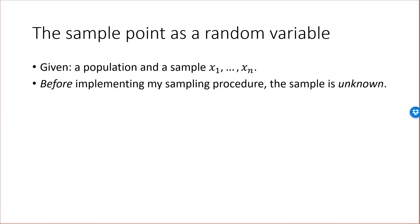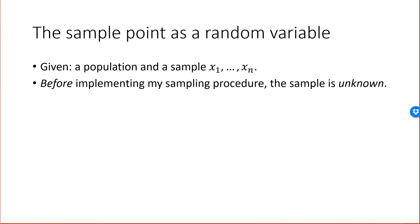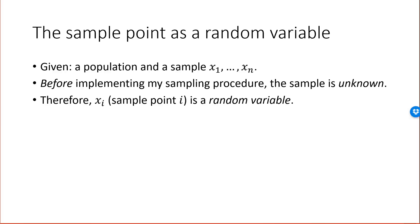So we think about the sampling procedure as our experiment. Then x1, for example, is a variable whose value is not known until the experiment has been performed. But that's exactly what we mean by a random variable. So the particular x1, the first sample point, is indeed a random variable. The value is only known after the experiment, and that's applicable to all of the sample points. In general terms, we can say that xi, sample point i, is a random variable, so we should actually use the capital letter for the sample point Xi.